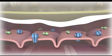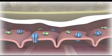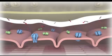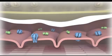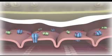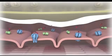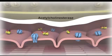Excitation-contraction coupling immediately results in muscle contraction. The action of acetylcholine is terminated by dissociation from receptors and passive diffusion away from the endplate, and by enzymatic degradation by acetylcholine esterase.